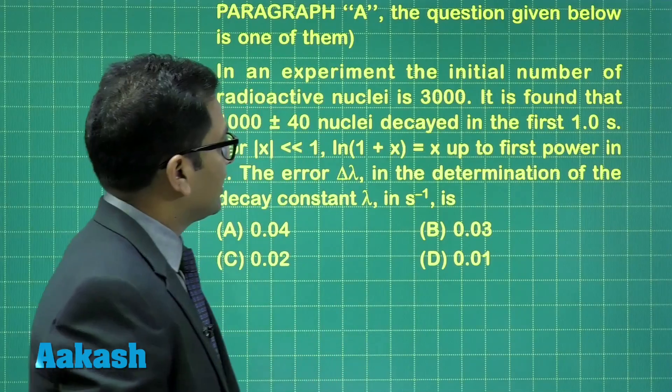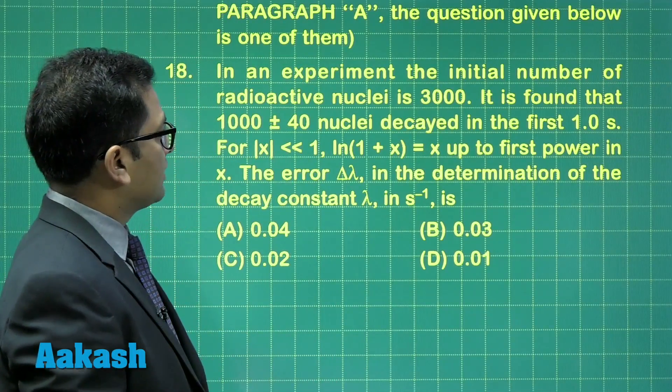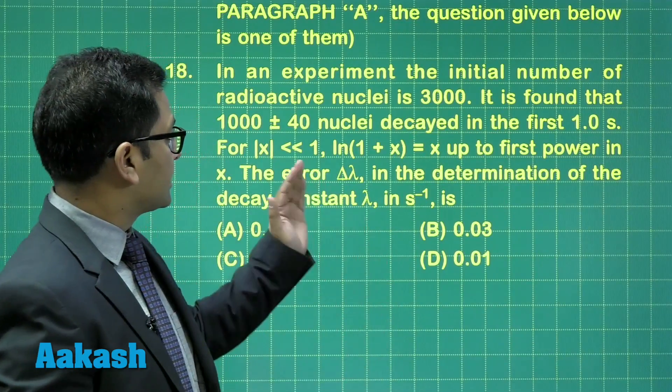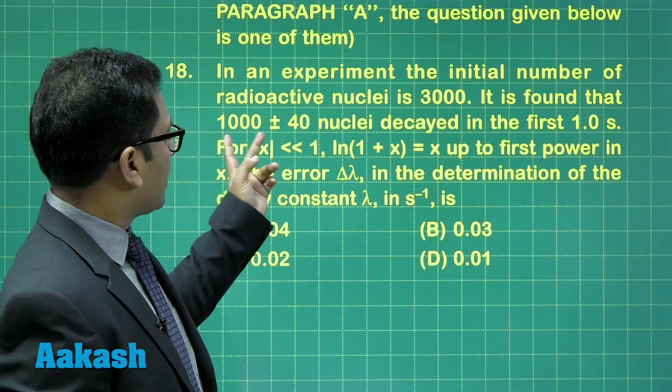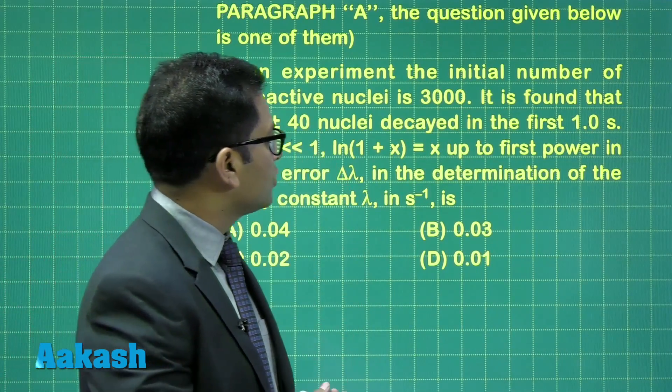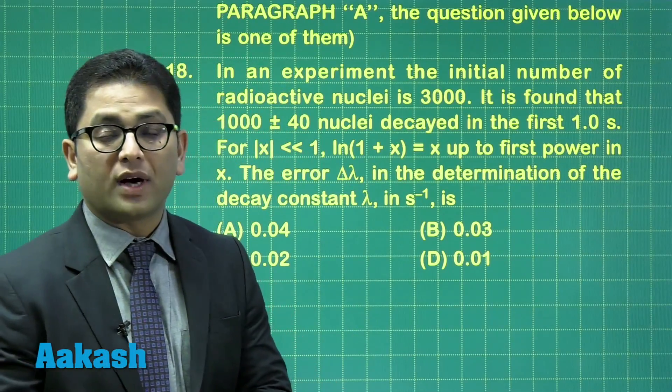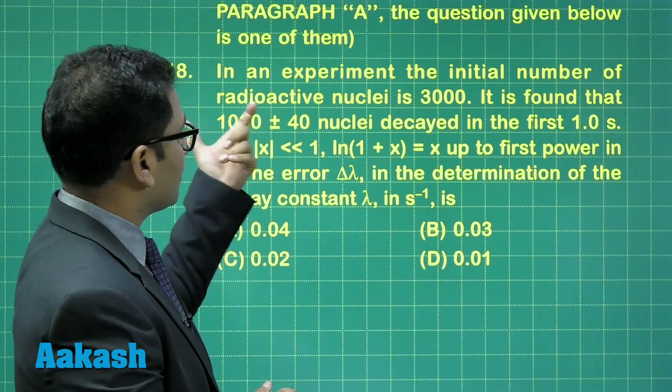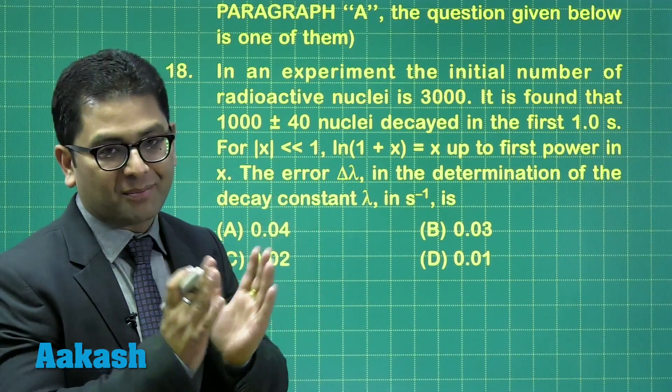In an experiment, the initial number of radioactive nuclei is 3000, what we call as N naught, and it is found that 1000 plus minus 40 nuclei decayed in the first one second. Now you need to remember, this is the number of nuclei decayed, this is not the remaining one.